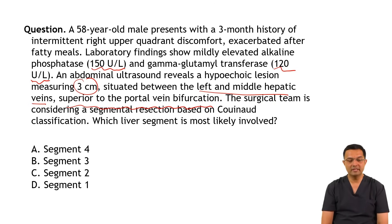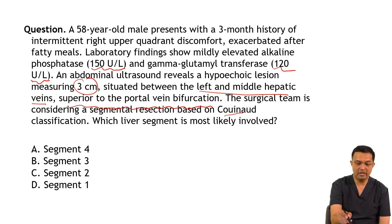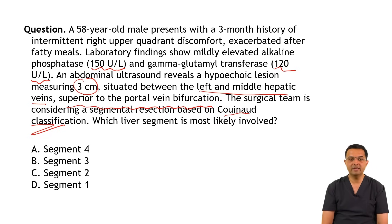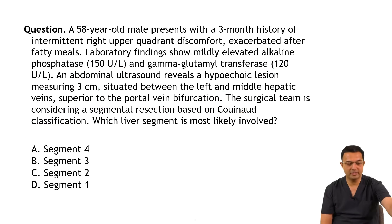The surgical team is considering a segmental resection based on Couinaud's classification. Which liver segment is most likely involved? The options are: Segment 4, Segment 3, Segment 2, and Segment 1.